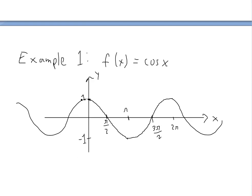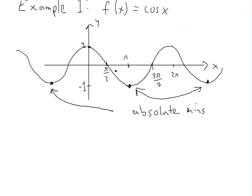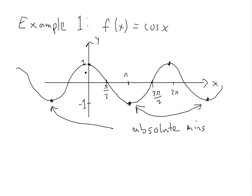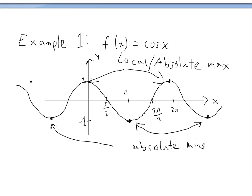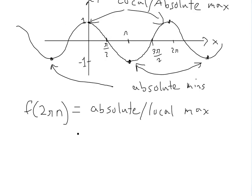In this case the absolute maximum is one and the absolute minimum is negative one. At every one of these bottom points you have absolute minimums — they keep going further and further. And the top points are absolute maximums. These points are also local maximums and local minimums, so they're all both absolute and local max and min as it keeps going on forever.